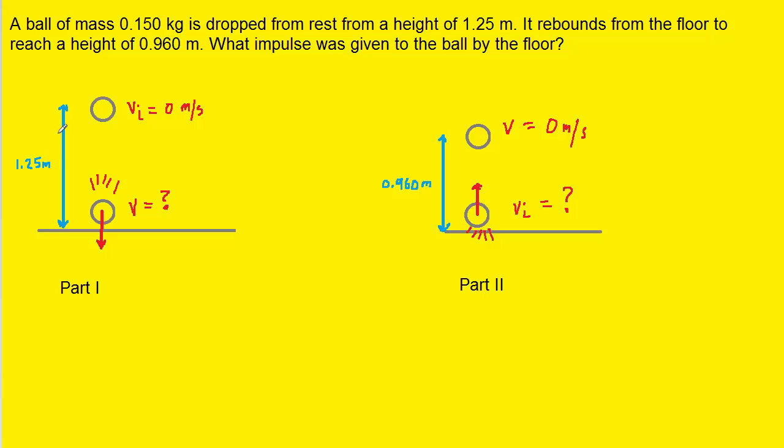In part one, the height will be 1.25 meters, because that is the original height from which the ball was dropped, and then in part two, this height will be 0.96 meters, because that is the height to which the ball rises. Let's go to part one, and our goal again is to find the final velocity of the ball, the moment before it hits the ground.